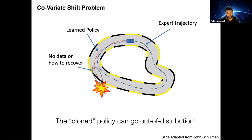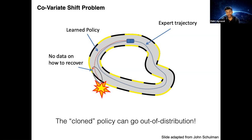This problem is called the covariate shift problem — the cloned policy can go out of distribution. There is a question: would the maximum performance in imitation learning be limited by the expert trajectory, or is there a way to perform better than the expert? If you're just doing behavioral cloning, you are often limited to the expert's performance. Sometimes if you have rankings between trajectories you can outperform the expert; otherwise we can combine demonstrations with reinforcement learning, something we'll look at shortly.